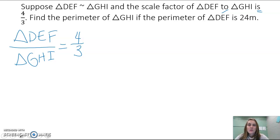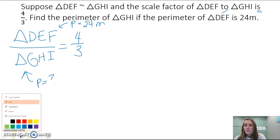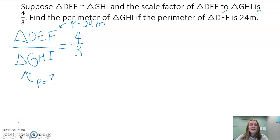We want to find the perimeter of GHI if the perimeter of triangle DEF is 24 meters. That means we can create a proportion because we have the scale factor, four-thirds, for DEF to GHI.